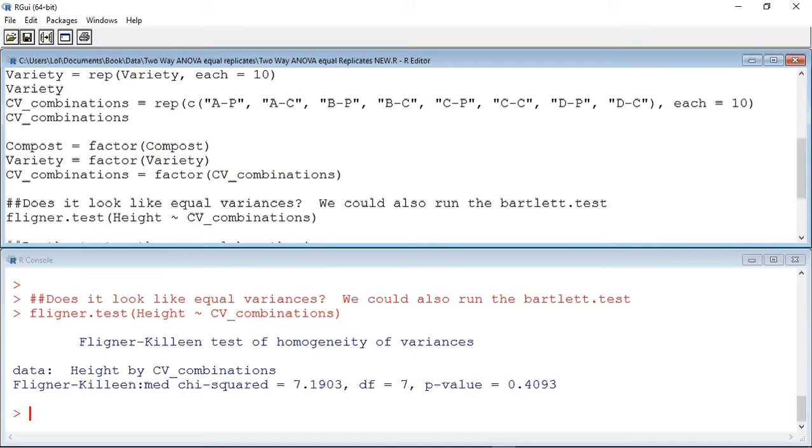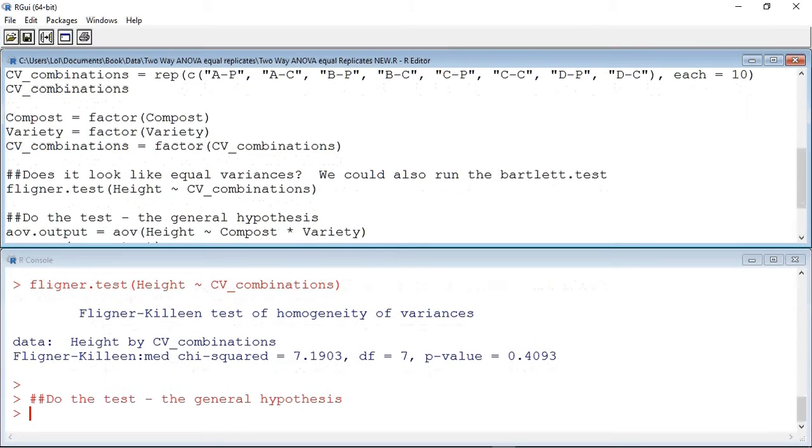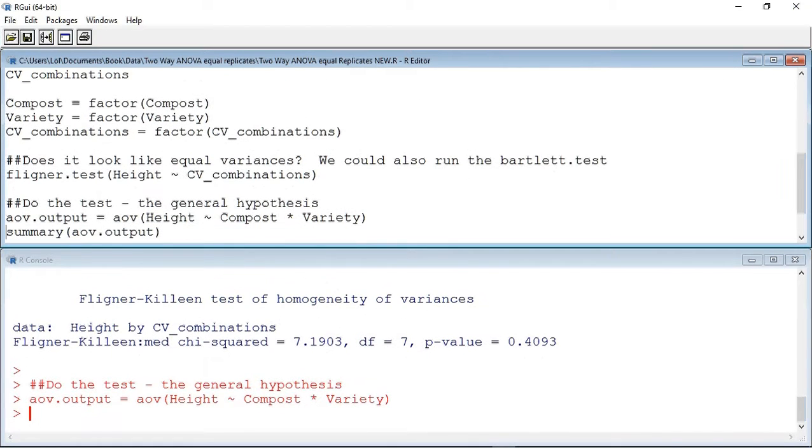And we cannot reject the null hypothesis that states there is no difference between the variances of our samples. As this is one of the conditions we have to meet, we can now move on to do the two-way ANOVA. To do the ANOVA, I am going to use the AOV command. The AOV command produces many results, and it can be quite confusing. So, I am loading those results into a variable called AOV.output. We can see that the focus of the ANOVA is height, as split up by compost and variety. The little star in the middle of compost and variety tells the program that I also wish to look at the interaction. The summary command is useful, as it will take all the results from the AOV test and display the ones that we are really interested in.